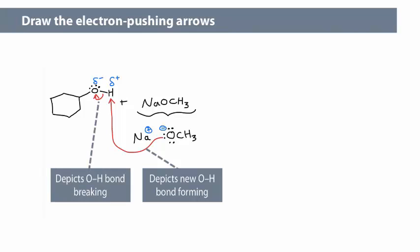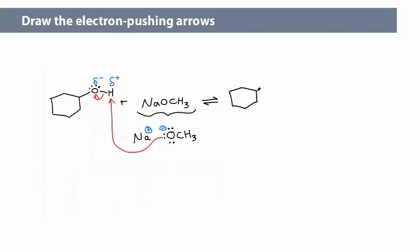Simultaneously, the second oxygen-hydrogen bond breaks. Now we can draw the products of this reaction. Notice that I have included equilibrium arrows, reflecting that all these reactions are in equilibrium in principle.